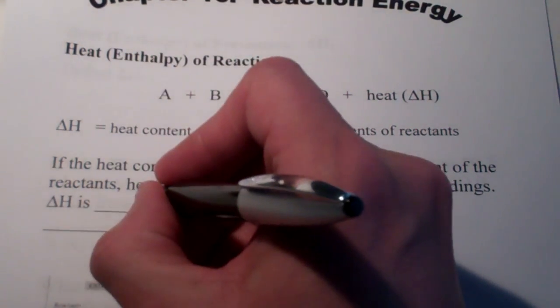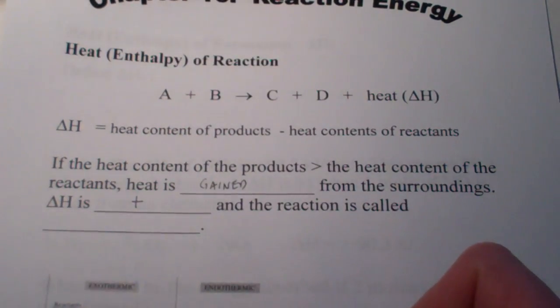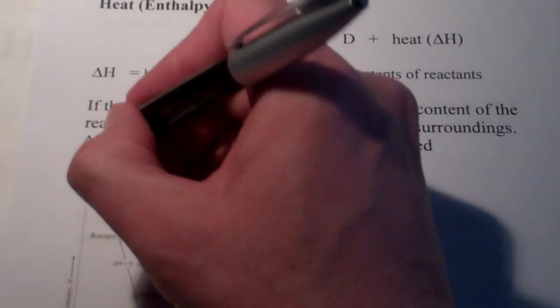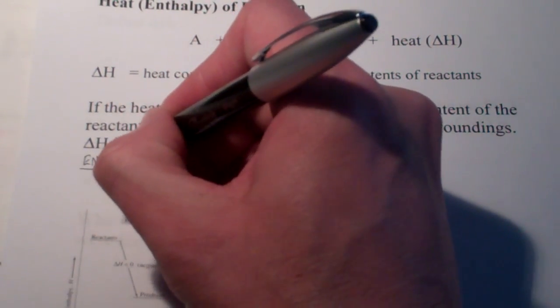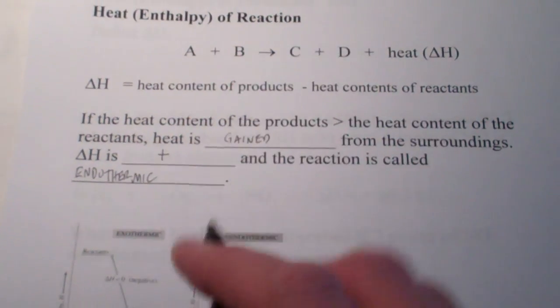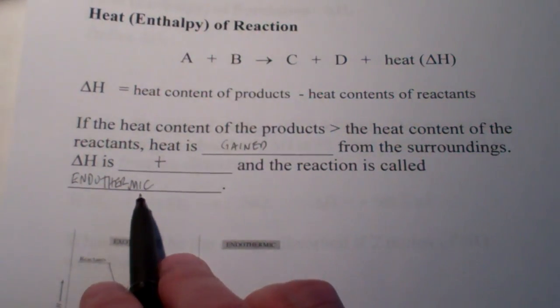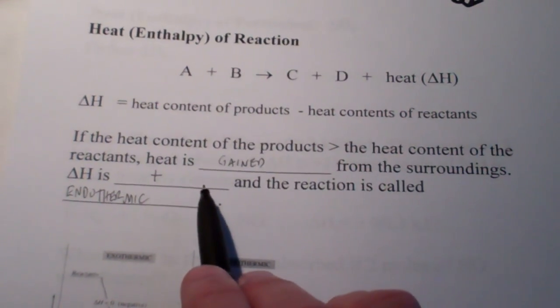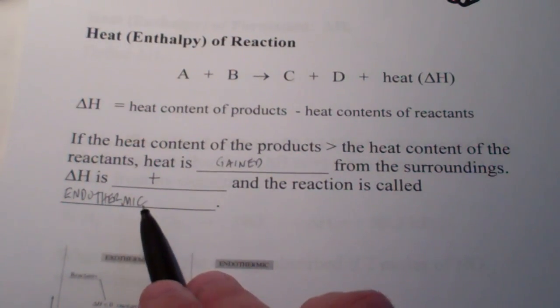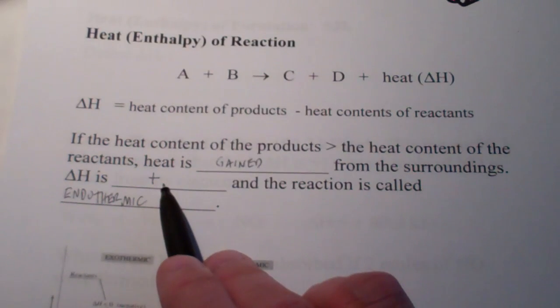Therefore, delta H is considered to be positive, and the reaction is termed endothermic. So, if we have to add heat to our reaction, my products have more heat than what I started with. We have to add heat. That reaction is called endothermic, and the sign for delta H is positive.